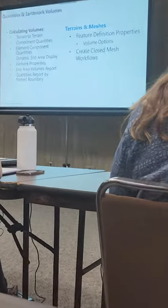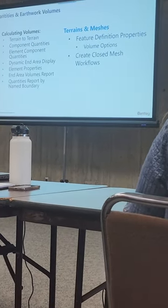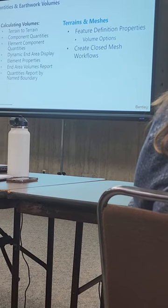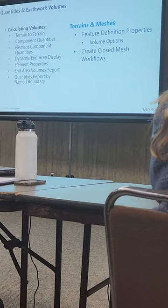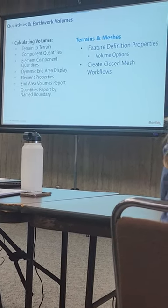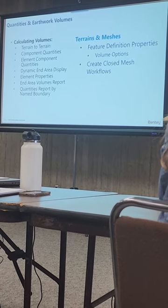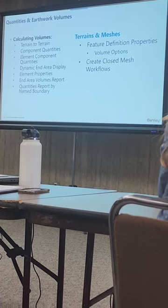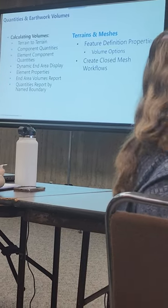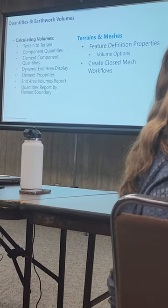We can look at the dynamic end area display and see the cut and fill areas, and also get some of the values. You can click on the elements and get the civil properties, which will give you the areas, the volumes, and also the linear length as well. And we have the end area volumes report.